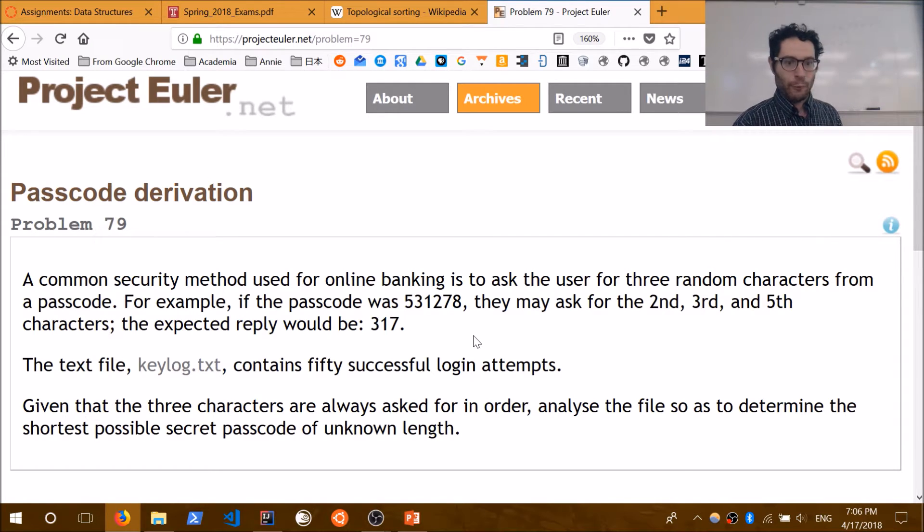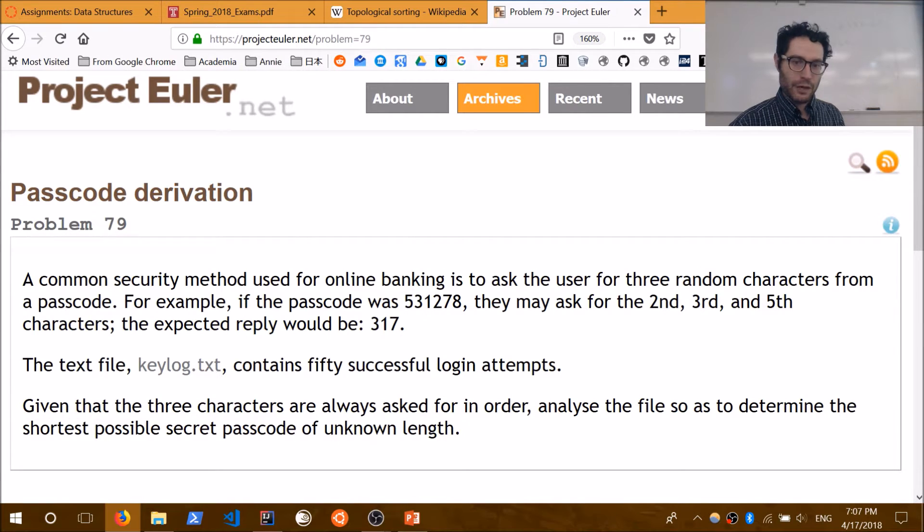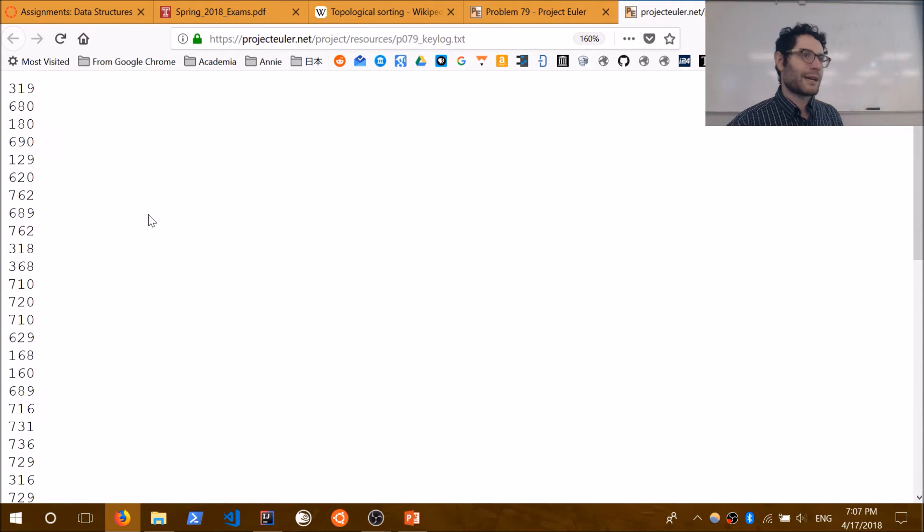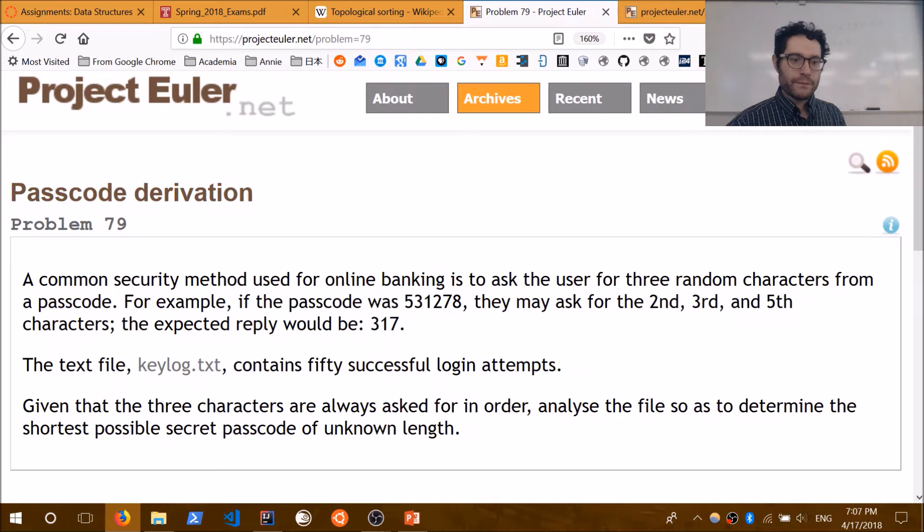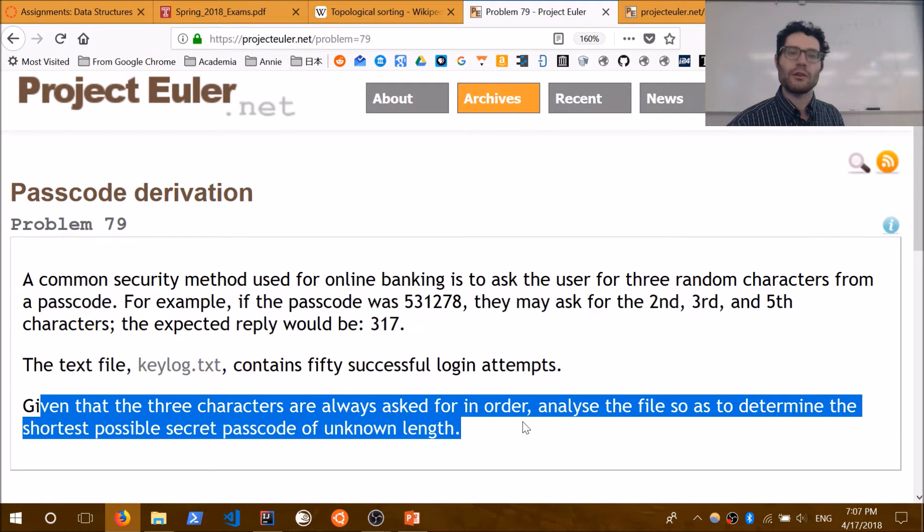So given that the three characters are always asked for in order - so the three characters we're going to ask for are always going to be in order. So I'll ask you for the second, third and fifth, but I'll never ask you for the third, second, fifth or the fifth, third, second. I'm always going to ask you for characters one, two and three, but never for three, two and one. So we have a file here, a text file called keylog.txt. It contains 50 successful login attempts. So this was a successful login attempt. They entered 3, 1, 9. So we know their password has 3, 1 and 9 in it. Given that the characters are always asked for in order, analyze the file so as to determine the shortest possible passcode of an unknown length. So shortest possible passcode probably means that there's no repeats in the initial original passcode.